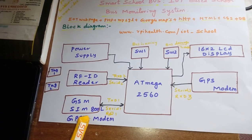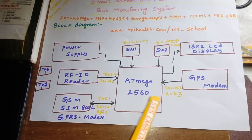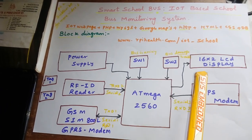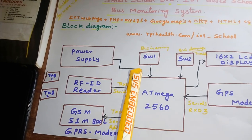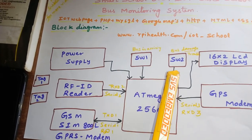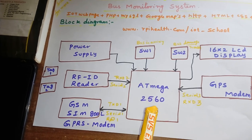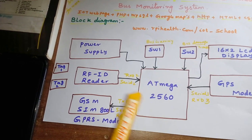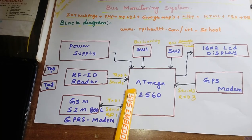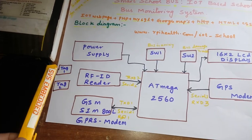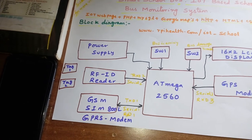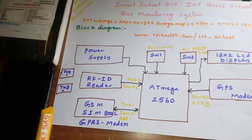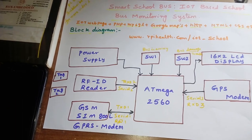This entire kit is connected to the bus. We are using a GPS modem, a 16x2 LCD display, a bus arriving switch, and a bus damage switch. If the bus is started at school, it will send data to Google Maps. When the bus starts, it sends an SMS alert to the two children's parents. If the bus is damaged anywhere, it will send an SMS to the administrator with the location.